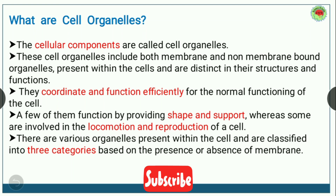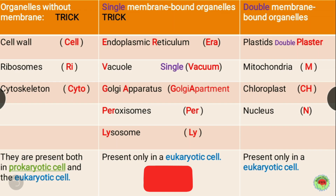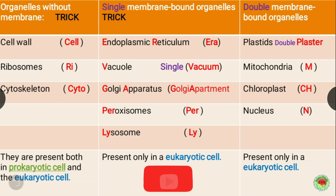There are various organelles present within the cell, classified into three categories based on the presence or absence of membrane. In the first column we have organelles without membrane, the second column has single membrane bound organelles, and the third column has double membrane bound organelles.